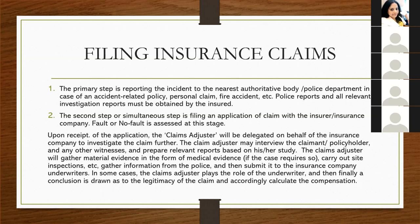When filing an insurance claim, the first stage is to report the incident to the nearest authoritative body or police department — in case of an accident-related policy, fire accident, and so on. Policy reports and all relevant investigation reports must be obtained by the insurer. The second step, which can occur simultaneously with the first, is filing an application of claim with the insurance company. Fault or no-fault is assessed at this stage.